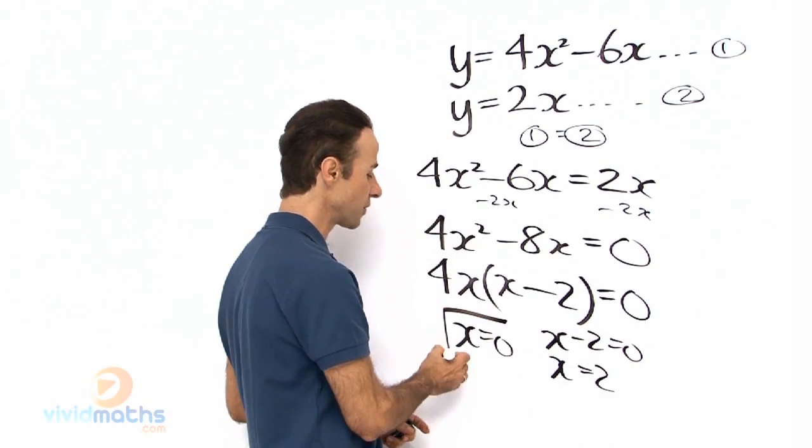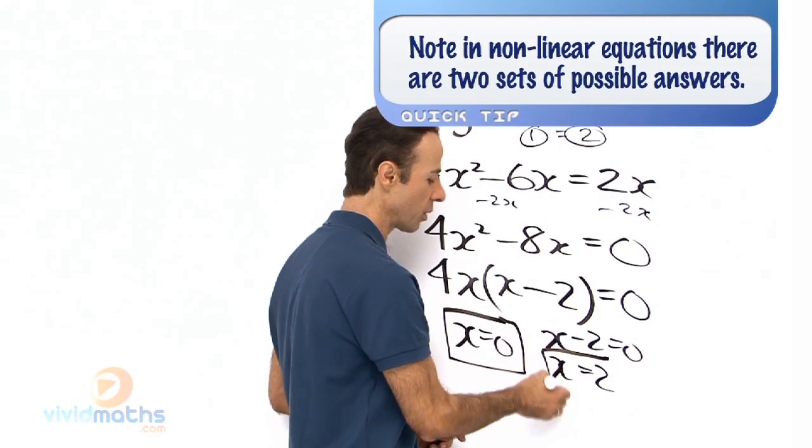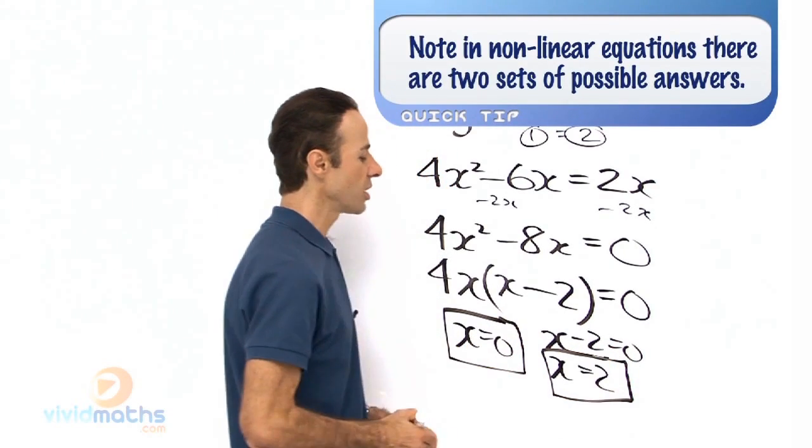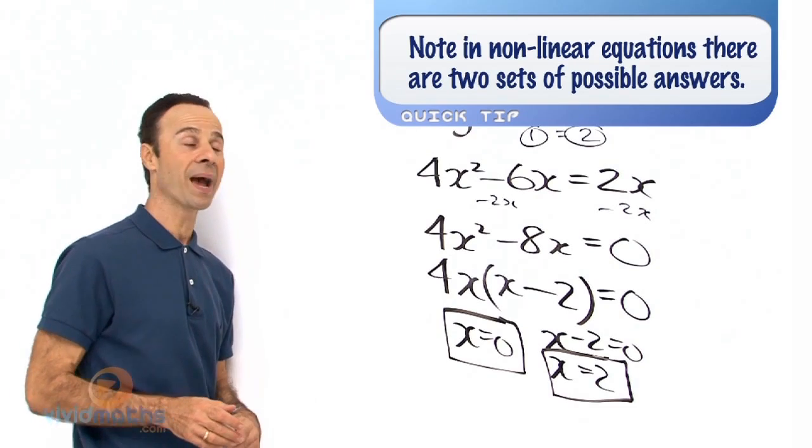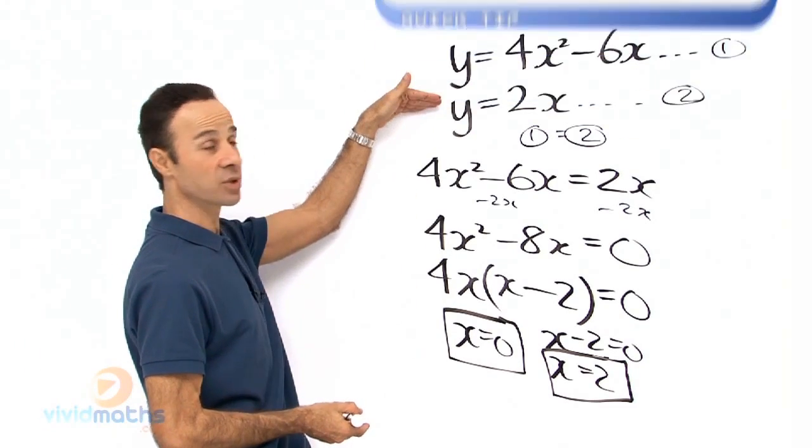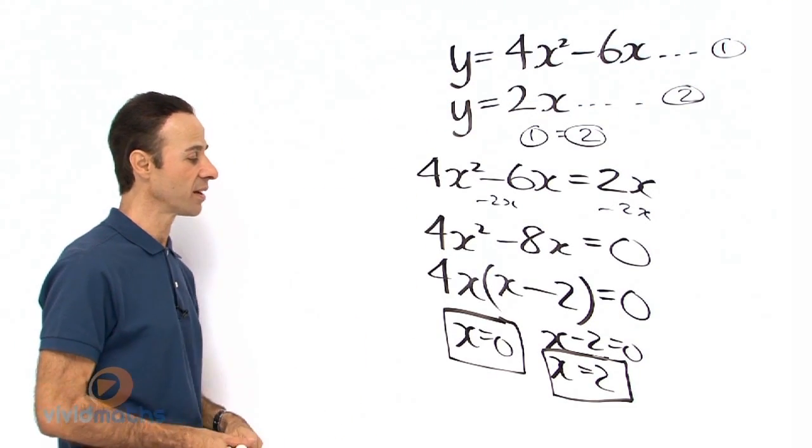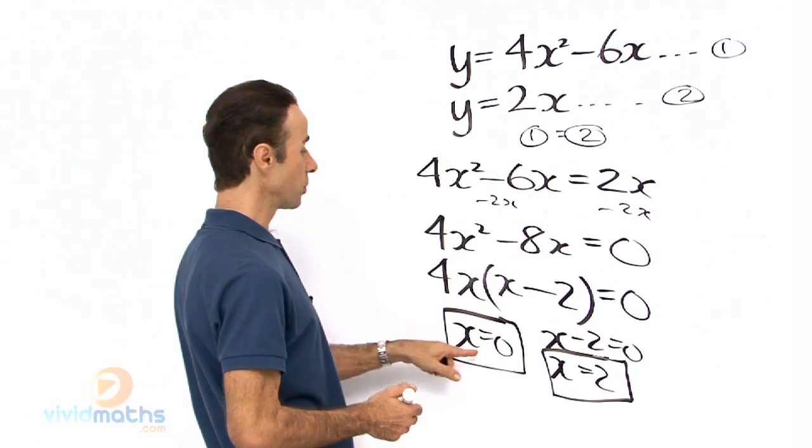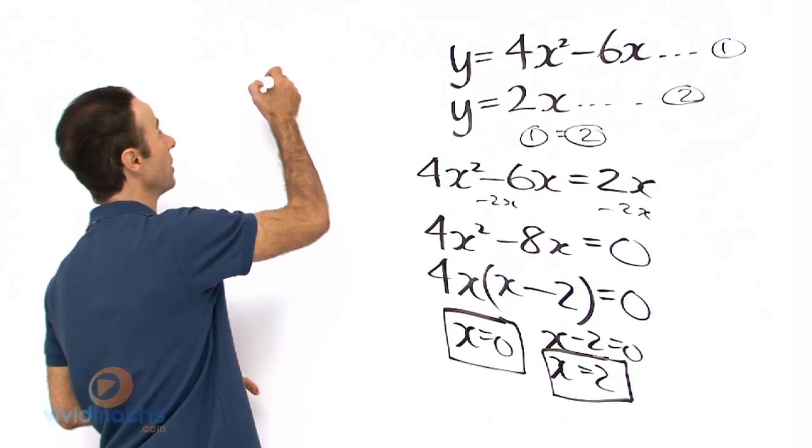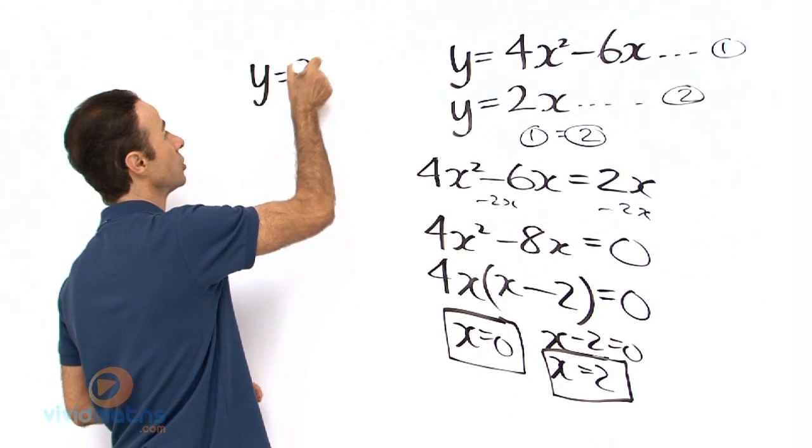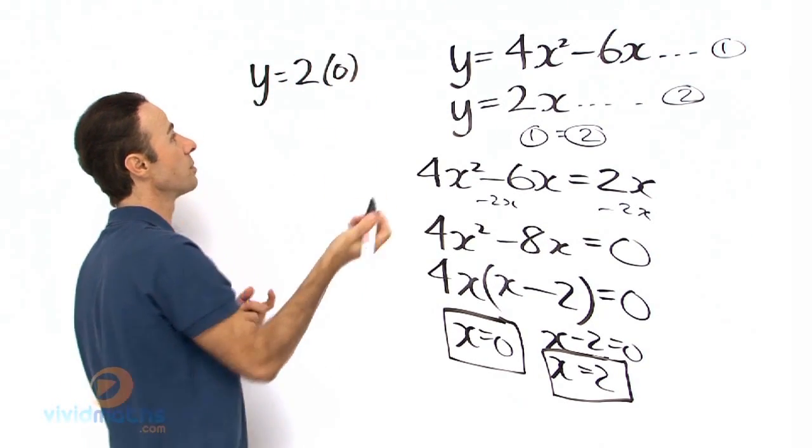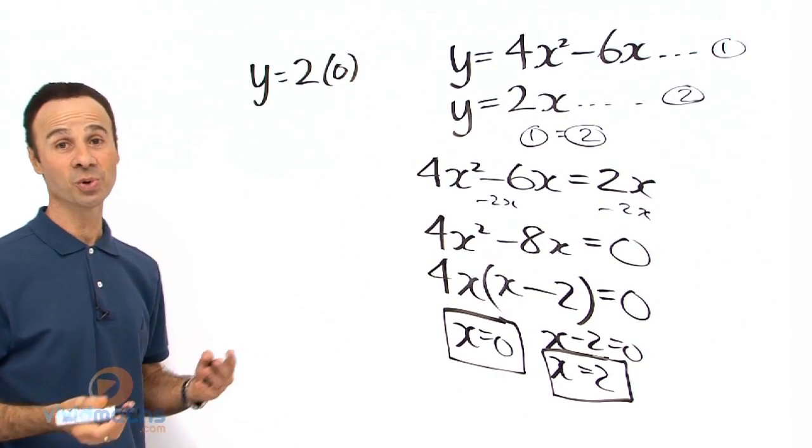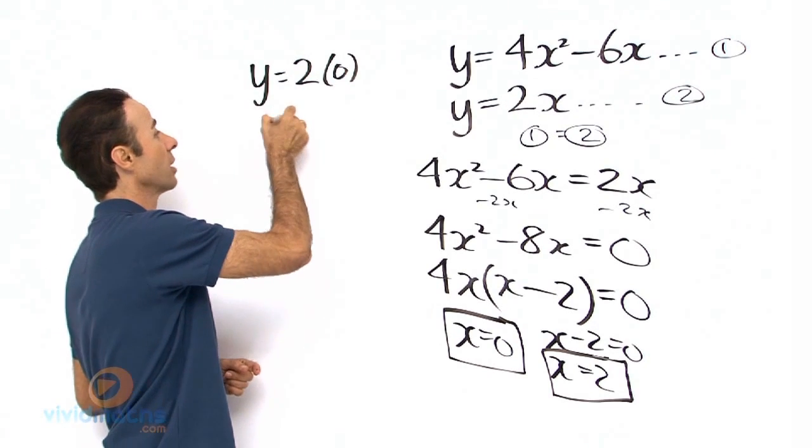So we have two answers for the x, one there and one there. So let us substitute these guys back into the original equation, probably number 2 which is easier, and discover and find out what we got for y. So let us put x equals 0 into that, so that means we have y equals 2 times 0, which means y is going to be 0, doesn't it? 2 naughts are 0, so that means y equals 0.